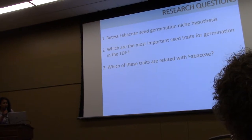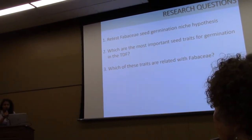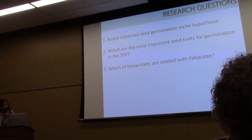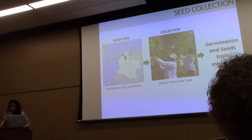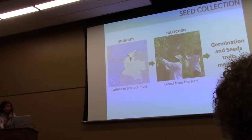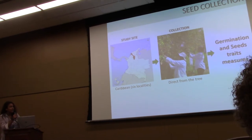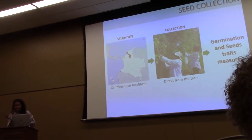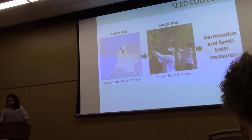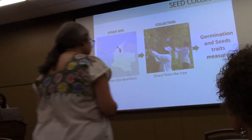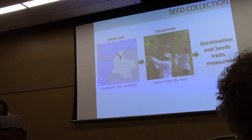We wondered which are the most important traits for germination in the tropical dry forest, and which of these traits are related to Fabaceae. We collected seeds in six localities in the Caribbean tropical dry forest in Colombia, collecting seeds from the trees while avoiding collecting more than 40% of a population's production to prevent damage. We then measured seed and germination traits.